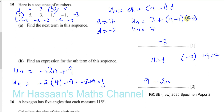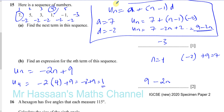So the nth term is u_n equals 7 plus (n minus 1) times minus 2. Expanding that: minus 2 times n is minus 2n, and minus 2 times minus 1 is plus 2, so you end up with 7 plus 2 which is 9, minus 2n — the same answer as before. Many students memorize this formula and use this method, which is perfectly fine, but my personal preference for IGCSE students is for them to understand what's happening. Both methods give the same answer. There we have the answer for question 15 — you can find all the other questions from this paper via the link in the description below.